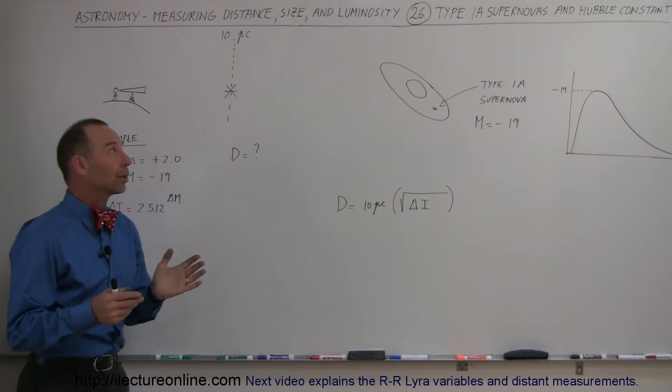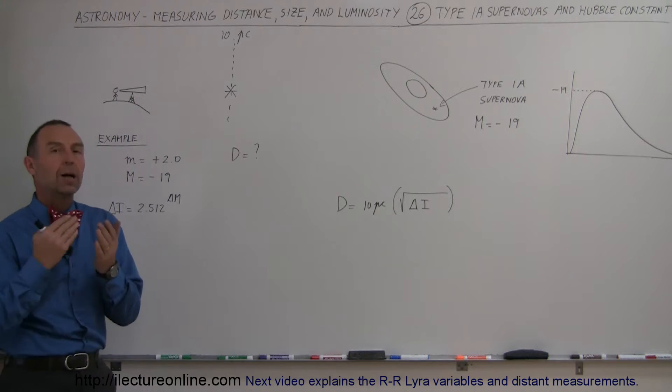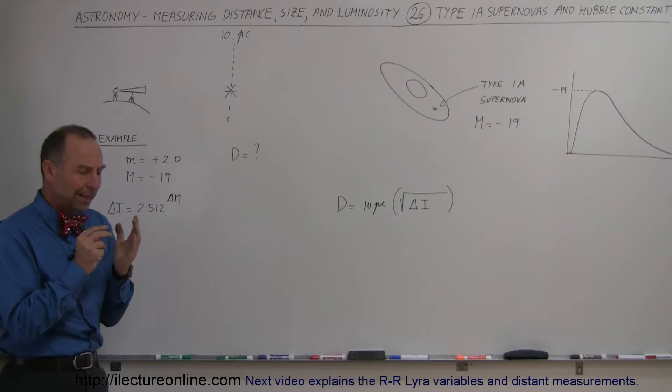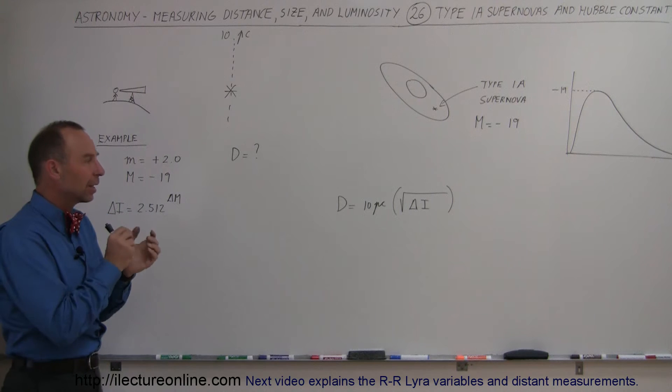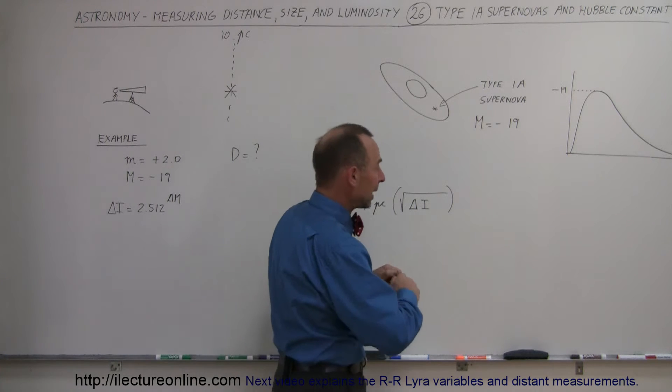Welcome to ElectronLine, and now we're going to take a look at what we call Type 1a supernovas and their relationship to the Hubble constant. Remember, the whole idea behind the Hubble constant was that we had to find the value of that Hubble constant accurately so we can use it to find the distance to anything in the universe.